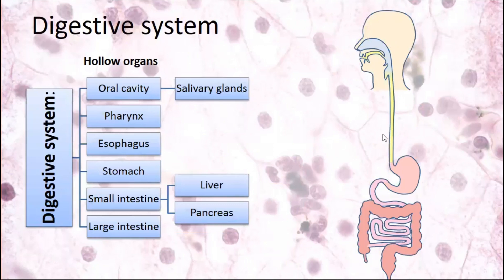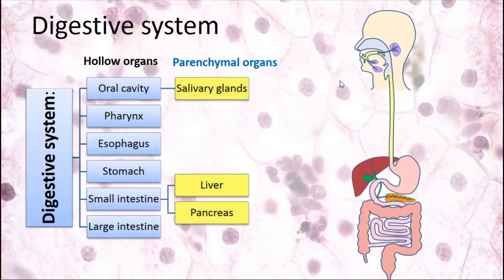The digestive tract contains hollow organs — oral cavity, pharynx, esophagus, stomach, small intestine, and large intestine. But the digestive system also has glands associated with the digestive tract: salivary glands, liver, and pancreas. And there are other parenchymal organs in other systems as well.